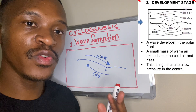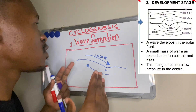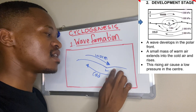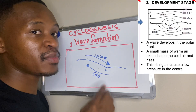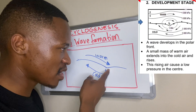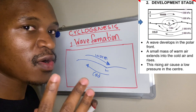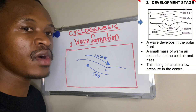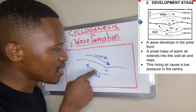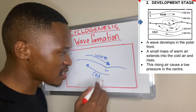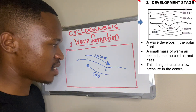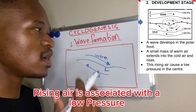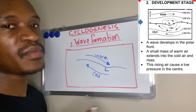Stage two is the wave formation stage, or development stage. This is when a wave starts to form at my polar front — it is no longer stationary. Cold air moves faster than warm air, and the warm air starts to rise. As it rises, it forms a low pressure at the center, which we can see developing in this wave formation stage.